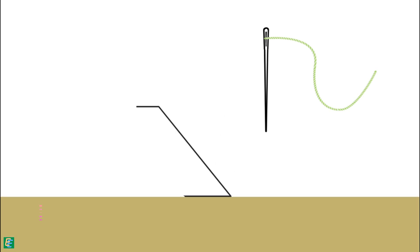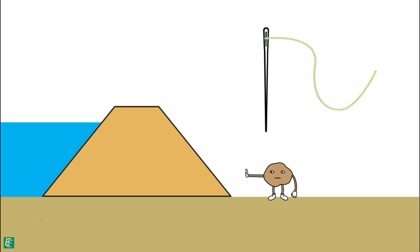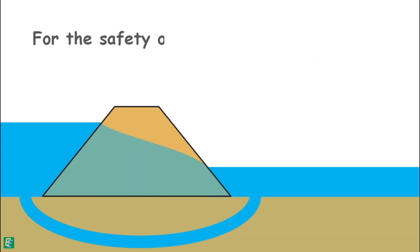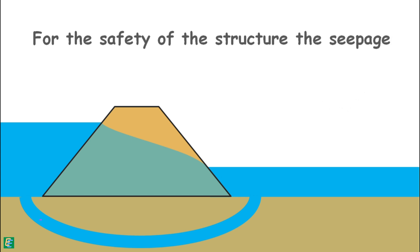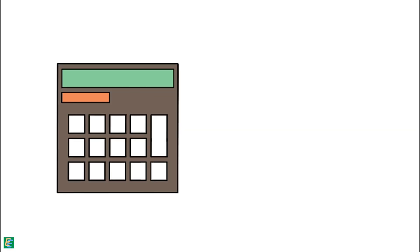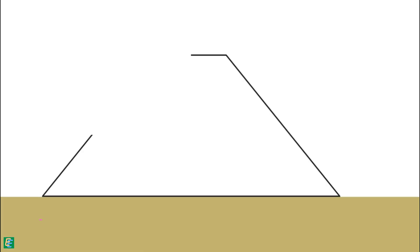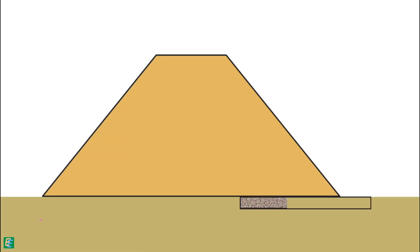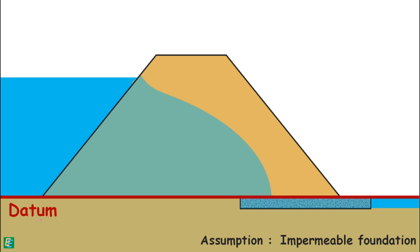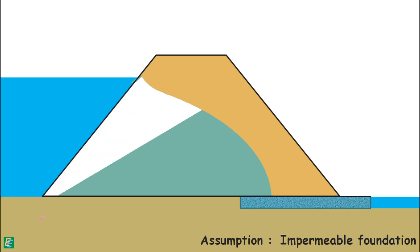It is difficult to construct an earth dam with zero seepage — some water will always seep through the dam and its foundation. For the safety of the structure against piping, seepage must be kept within acceptable limits. To estimate the amount of seepage through the body of a homogeneous earth dam with a horizontal filter at the downstream end, we assume the foundation is impermeable, so water seeps only through the dam body. The bottom surface is taken as the datum.